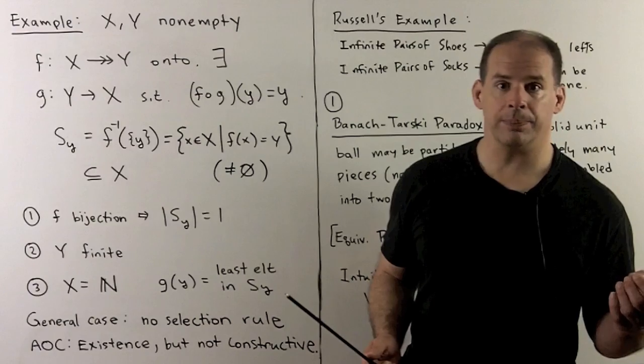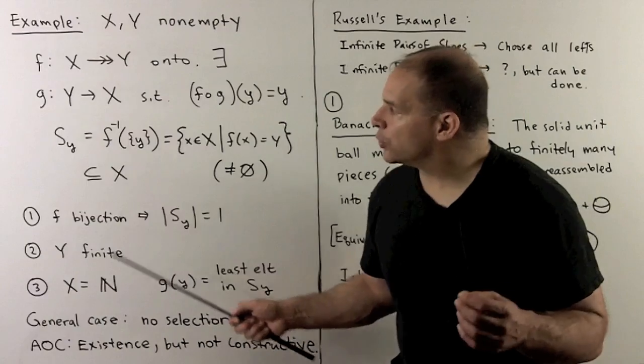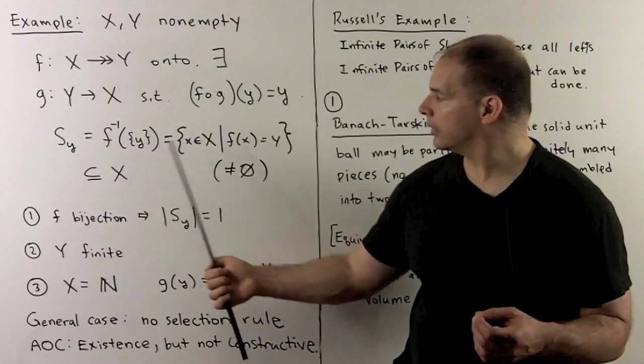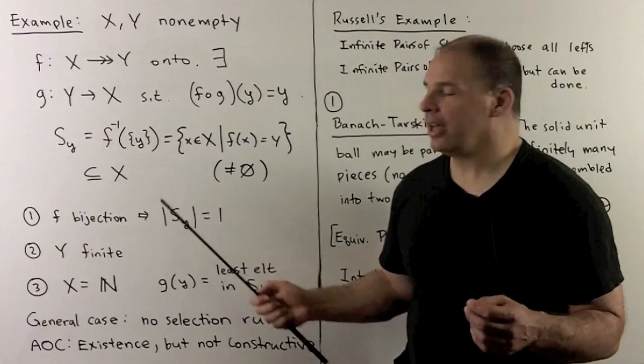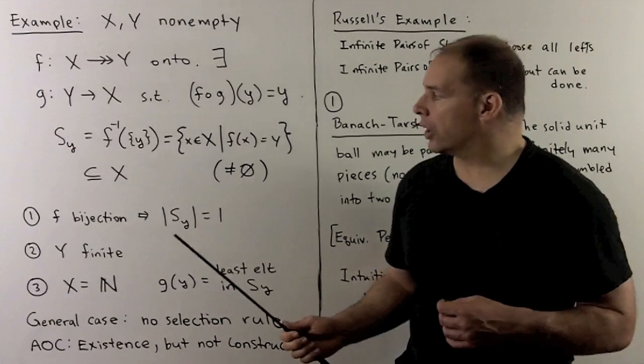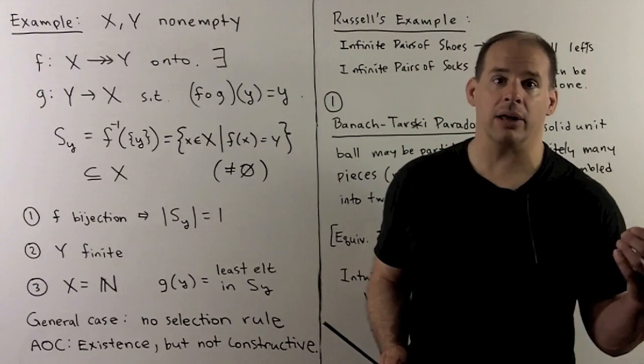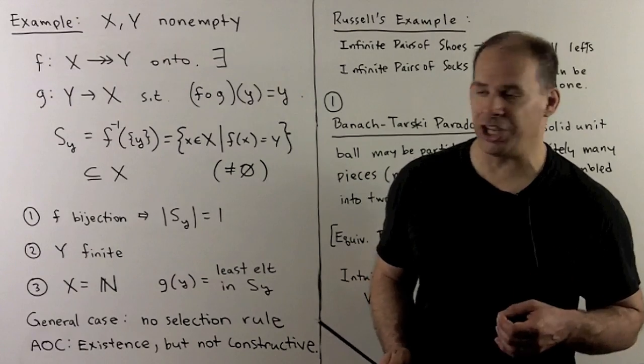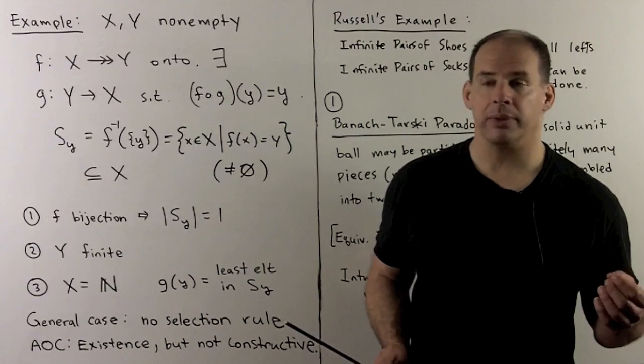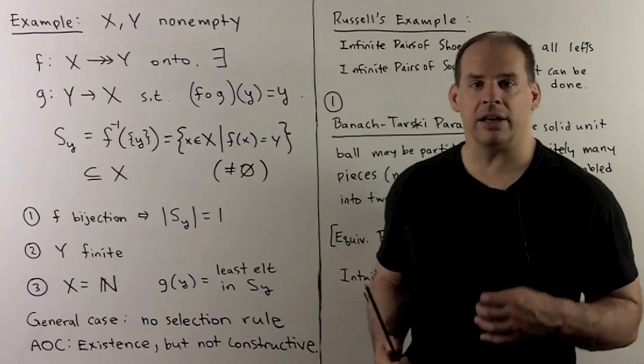To have this in full generality, I need the axiom of choice. Let's see where the choice function comes in. For that, I need a collection of sets, subsets of X. For each y in Y, we'll define S_y to be the inverse image under F of the point set {y}. These are subsets of X, and they're non-empty because F is an onto map. That means we can apply the axiom of choice. There's a choice function, meaning to each S_y I can assign an element inside of S_y, which is an element of X. That's how I define G. G looks at y, goes to S_y, and applies the choice function. By the definition of S_y, we get the condition.